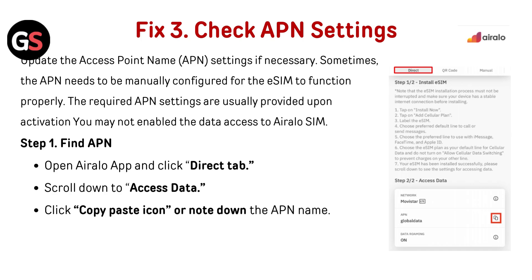Fix 3: Check APN settings. Update the Access Point Name settings if necessary. Sometimes the APN needs to be manually configured for the eSIM to function properly. The required APN settings are usually provided upon activation. You may not have enabled data access to the Airalo SIM. Step 1 — Find APN: Open the Airalo app and click the Direct tab. Scroll down to access data, then click the copy/paste icon or note down the APN name.